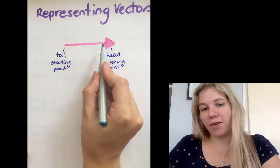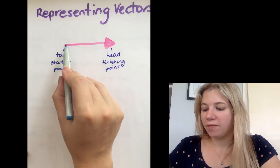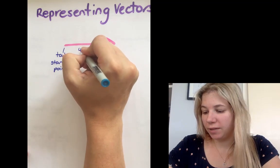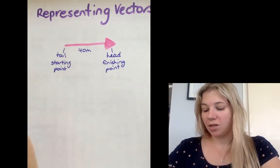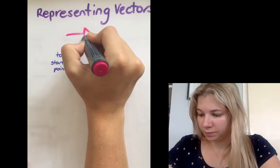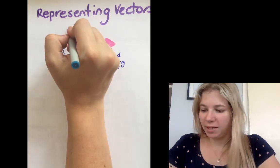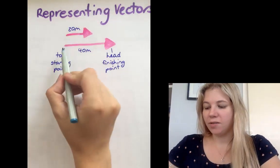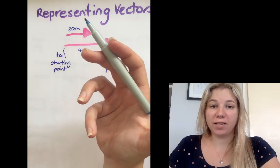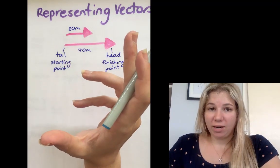Now the size of the arrow itself also indicates the size of the vector. If this was representing that something traveled for 40 meters, then you would expect that an arrow of half the size would be representing about 20 meters. So the actual size or length of the arrow indicates how far or how big the vector is. But remember, a vector means that it has to have direction.